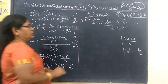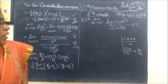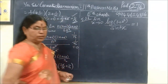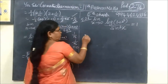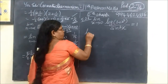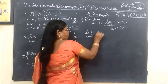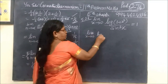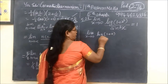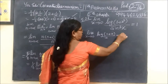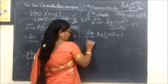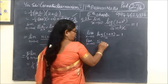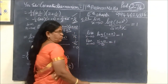Coming to the next question: limit of log of 1 plus x cubed by sine squared x as x tends to 0. We use the standard formula: limit x tends to 0 of log of 1 plus x by x equals 1.